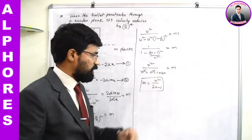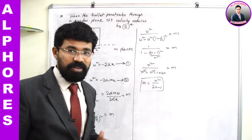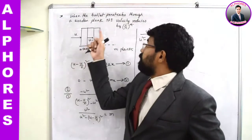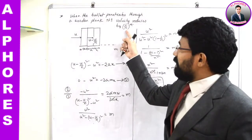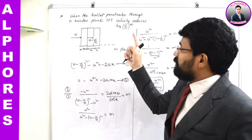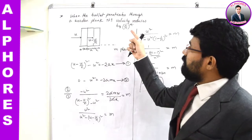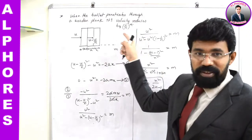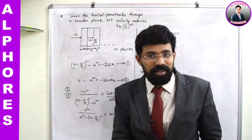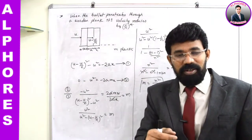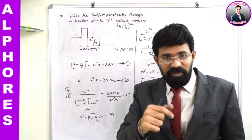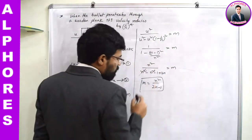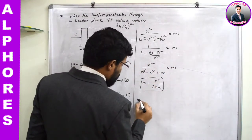So after penetrating through n²/(2n-1) planks, the bullet will stop. Here n is given by the data: when the bullet has penetrated through a single plank, the velocity is reduced by 1/n. If, for example, the velocity reduces by 1/5th, then n = 5.